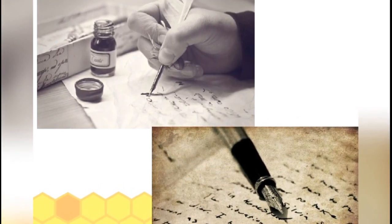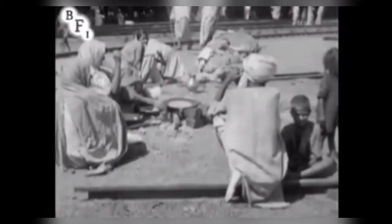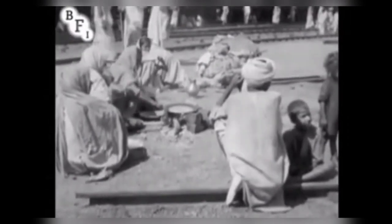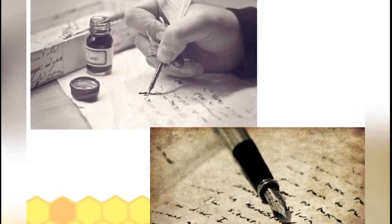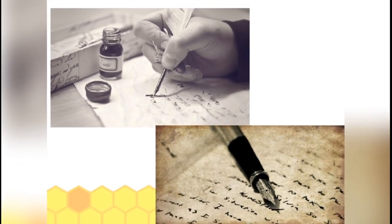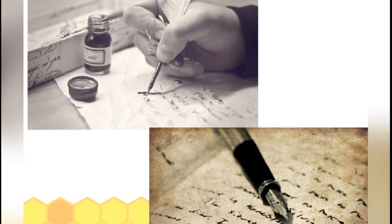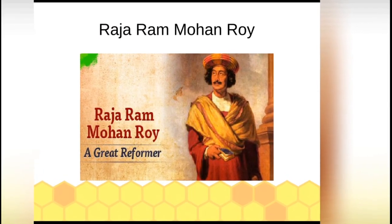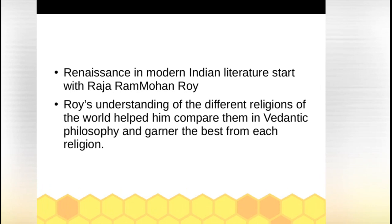As the British came to India to trade and ultimately rule, they gave proper education to the natives. Indians started reading, speaking, and eventually writing in English, and now had an audience for their English writing. One of the most prominent early writers in English was Raja Ram Mohan Roy. This brings us to the fifth phase, 1900 to 1950.